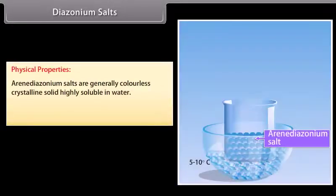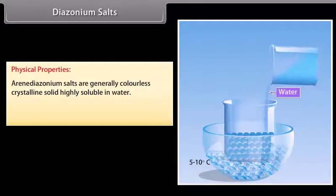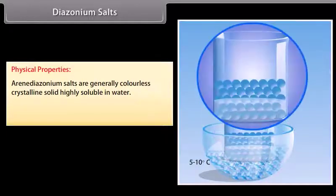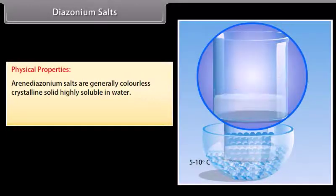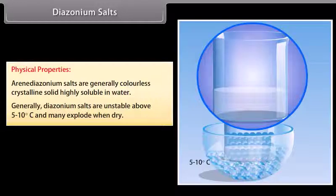Physical properties of diazonium salts: They are generally colourless, crystalline solids, highly soluble in water. Diazonium salts are unstable above 5–10°C and many explode when dry.